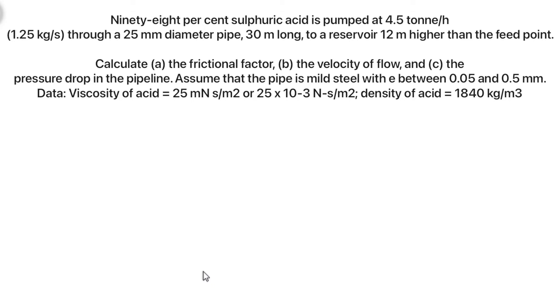98% sulfuric acid is pumped at 4.5 tons per hour, which is 1.25 kilograms per second, through a 25 millimeter diameter pipe, 30 meters long, to a reservoir 12 meters higher than the feed point. Calculate the pressure drop in the pipeline, assuming that the pipe is mild steel with a roughness between 0.05 and 0.5 millimeters. So we are given the viscosity of the acid to be 25, density of 1840, so we are dealing with sulfuric 98%.